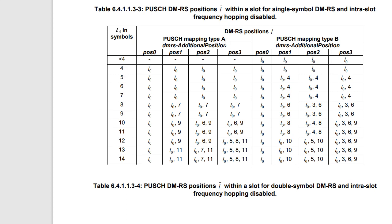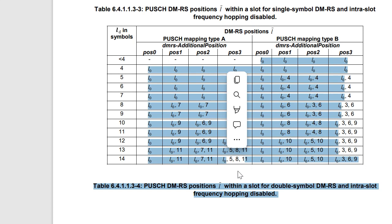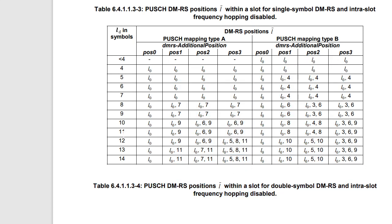There is a column for mapping type A and mapping type B, and one extra parameter introduced: the position. By default there will always be one DMRS at position 0, but on top of it if you want extra DMRS, that is defined by position 1 (one extra DMRS), position 2 (two extra), position 3 (three extra). So we can have up to 4 DMRS, and depending on the number of PUSCH symbols this would vary — the number of PUSCH symbols ranges from 4 to 14.